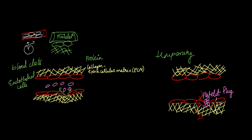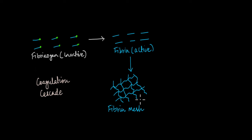The injury needs to heal and the body needs to repair it. What helps the platelet plug is something known as the fibrin mesh. A fibrin mesh is a net-like structure that forms on top of the platelet plug and holds the platelet plug in place so that blood cannot escape the site of injury.